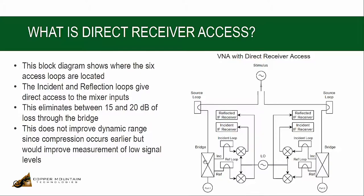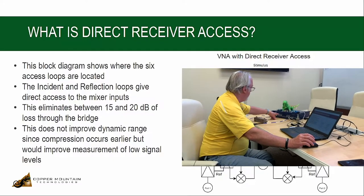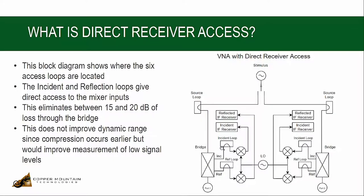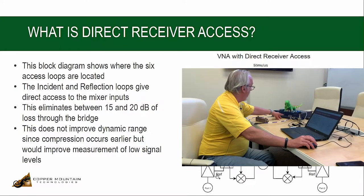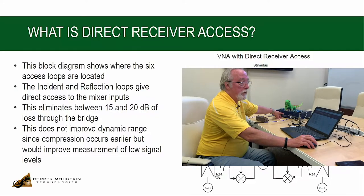The measurement bridge separates incident from reflected signals, and so the incident, the measured incident, or coupled incident signal from the bridge, then is available on the incident loop, which is called Ref 1 here. The reflected signal is available on the reflection loop, which is called Mez 1 here on the front panel.